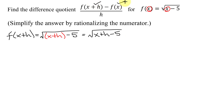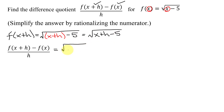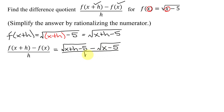We were given f(x), so now we're ready to find the difference quotient. It equals f(x+h) — which is the square root of x+h minus 5 — minus f(x), our function, which is the square root of x minus 5, all divided by h.